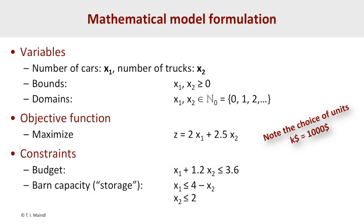Apart from the objective function, we have constraint equations. The budget constraint reads: x1 + 1.2·x2 ≤ 3.6 (in kilo-dollars). The storage constraint states that the number of cars x1 is at most four minus however many trucks we have: x1 ≤ 4 − x2. Finally, the number of trucks x2 can be at most two, because there are only two large spaces. That's the complete mathematical formulation.